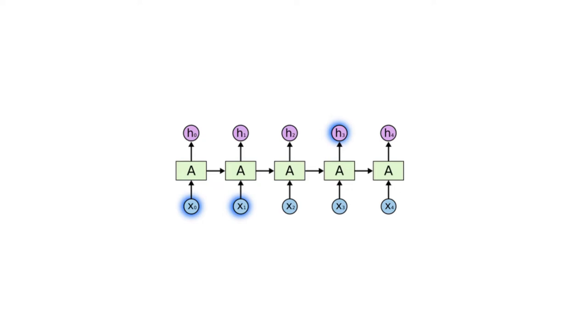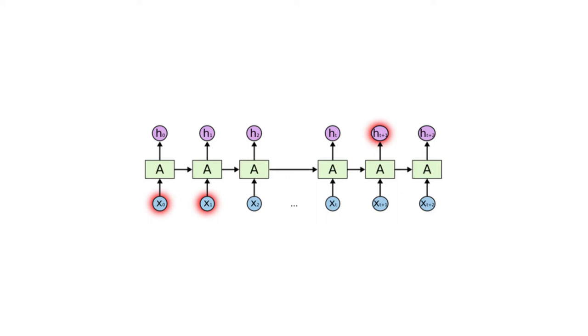But there are also cases where we need more context. Consider trying to predict the last word in the text 'I grew up in France, I speak fluent...' Recent information suggests that the next word is probably the name of a language. But if we want to narrow down which language, we need the context of France from further back. It's entirely possible for the gap between the relevant information and the point where it is needed to become very large. Unfortunately, as that gap grows, RNNs become unable to learn to connect the information.